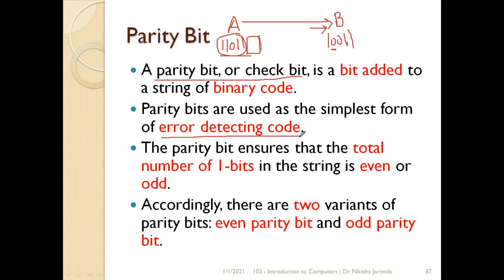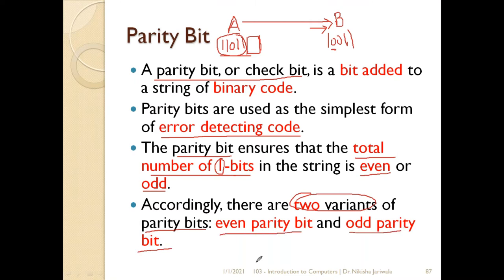It is also known as error detecting code — it is used to detect errors. Parity bit checks the total number of ones; the total number of one bits will be either even or odd. So we can say parity bits have two variants, meaning two types: even parity bit and odd parity bit.